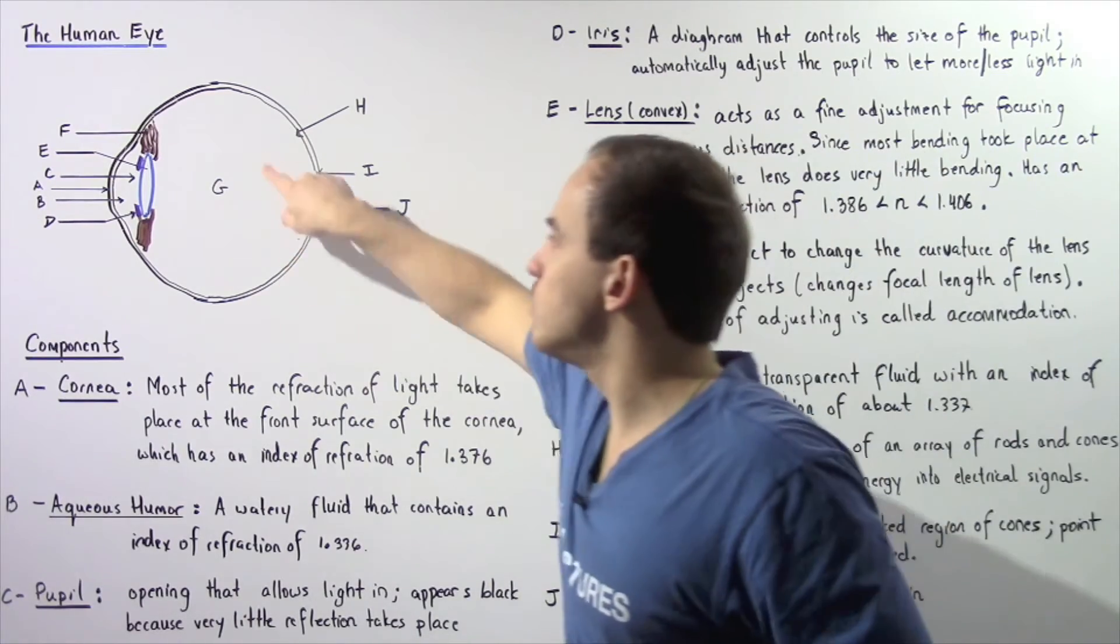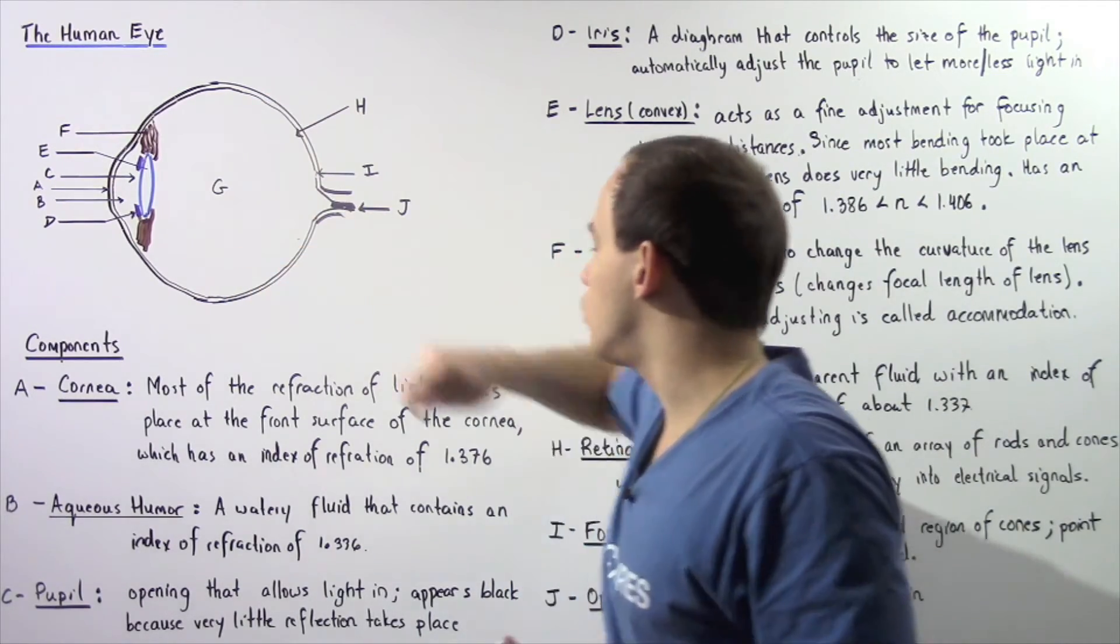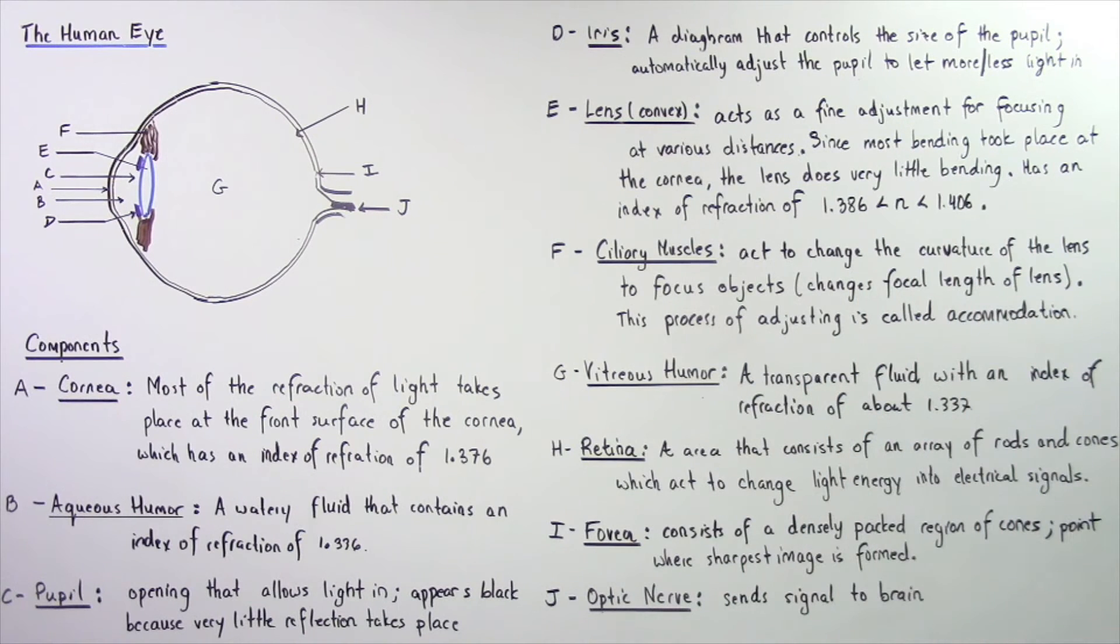Let's move on to section G, which is shown by the following region. This is known as the vitreous humor. And this is essentially a transparent fluid with an index of refraction of about 1.337.